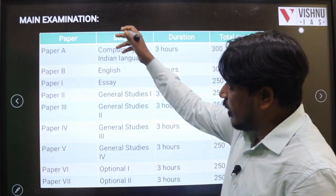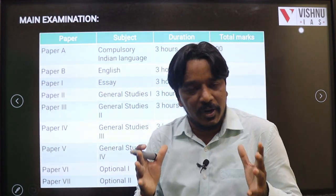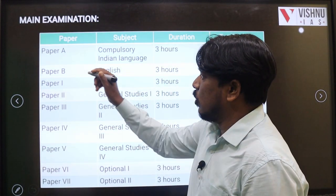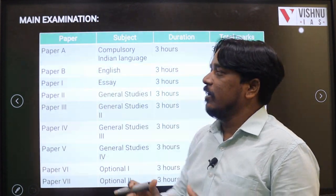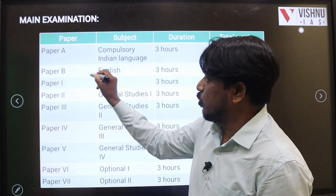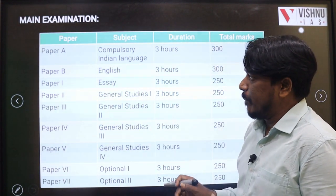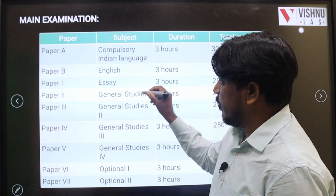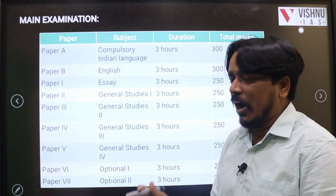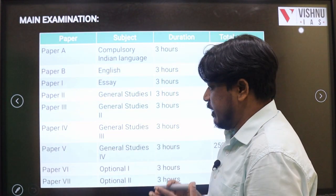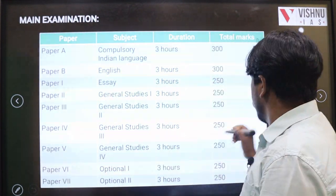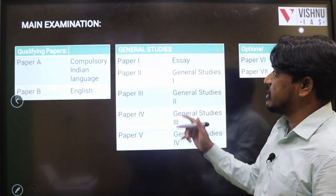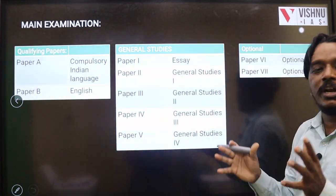In the mains paper you will find Paper A and Paper B, both qualifying papers. Paper A is any Indian language and Paper B is compulsory English. The remaining papers are the main mains papers: Essay, General Studies 1 through 4, and Optional subjects Paper 1 and Paper 2. So the first two are qualifying, then GS papers including Essay, and finally optional papers.